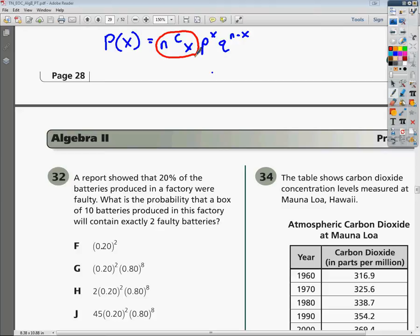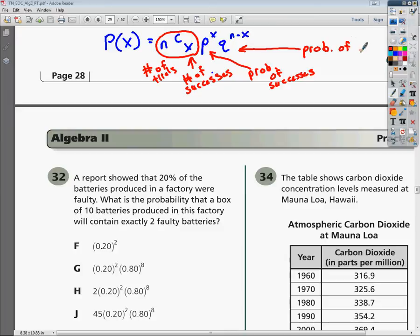But pretty much what this is going to mean is that n just means the number of trials that you have. Your x is going to be your number of successes. Your p is going to be the probability of successes. And your x here at the top of your p, that's going to be how many of those successes you have. And then this is going to be how many of the failures that you have.